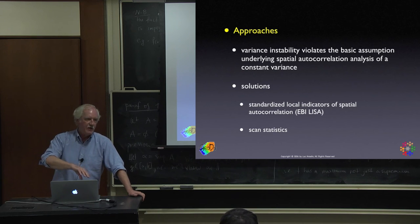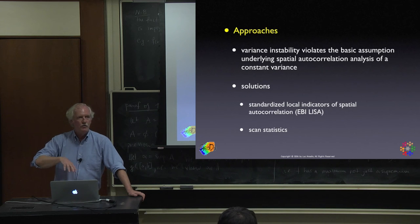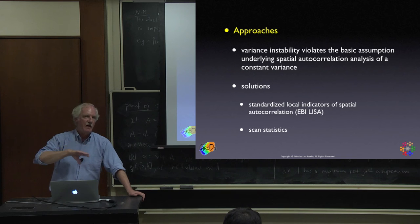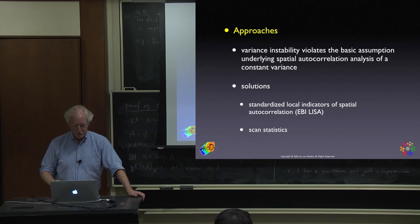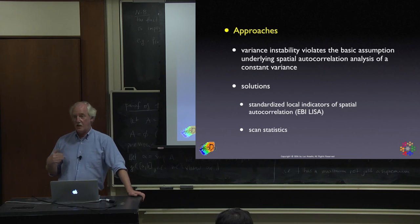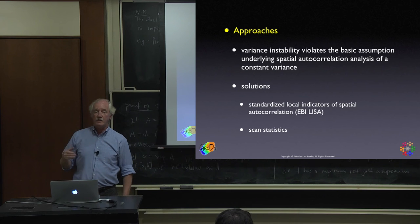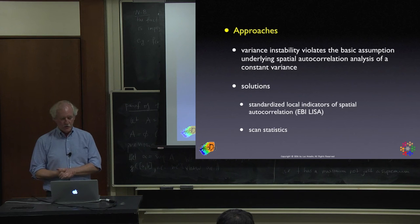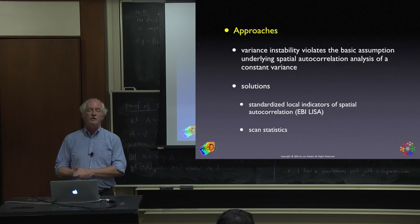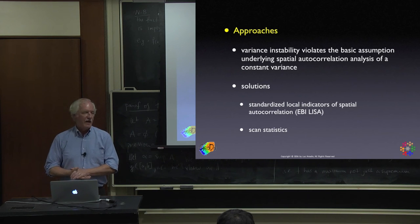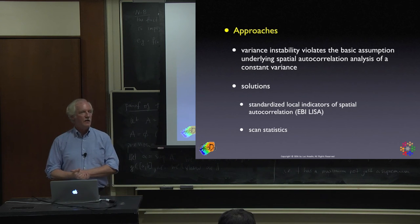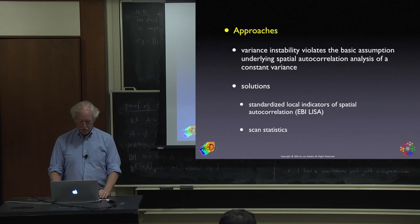It's very tempting when dealing with rates to smooth the rates first and then carry out the spatial autocorrelation — that's a no-no. Many smoothing methods introduce spatial correlation as a result of the smoothing itself. If you do that and then test for spatial autocorrelation, you don't know whether you're detecting real autocorrelation or just the autocorrelation you put in via smoothing.